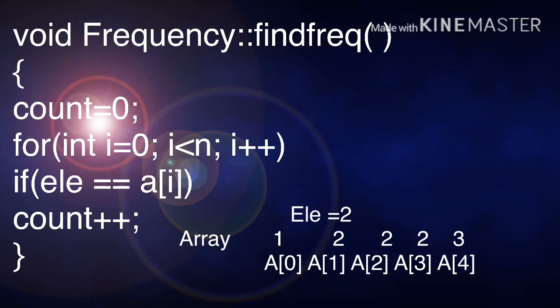i starts from 0 because array element starts from 0. So for i equals 0, i less than n. N is 5. i++. Each and every time, it increases by 1. So if element is 2, if 2 is equal to - that is double equal to - a[i], i is 0, a[0] is 1.